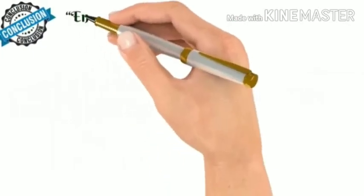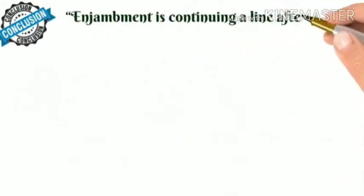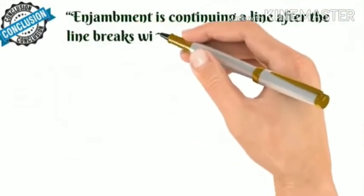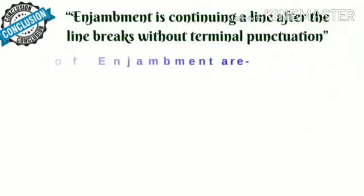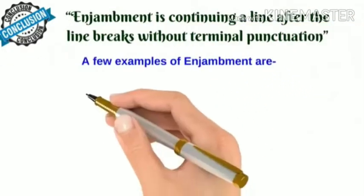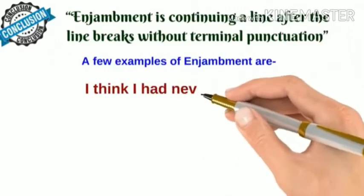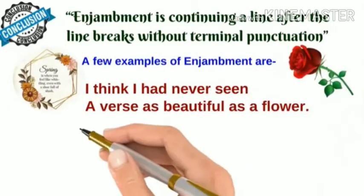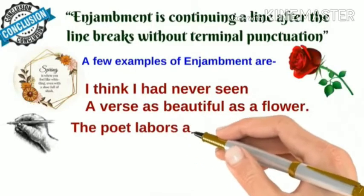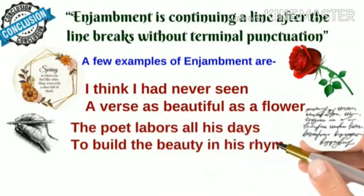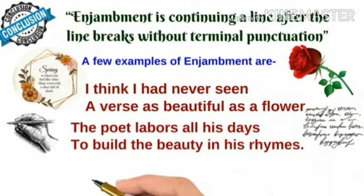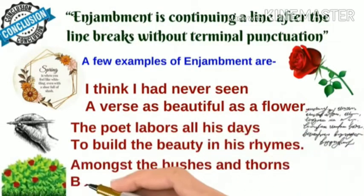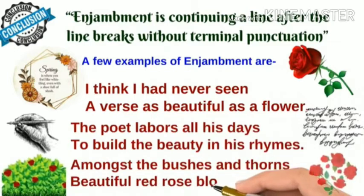Enjambment is continuing a line after the line breaks without terminal punctuation. A few examples: 'I think I had never seen a verse as beautiful as a flower.' 'The poet labours all his days to build the beauty in his rhymes.' 'Amongst the bushes and thorns, beautiful red rose blooms.'